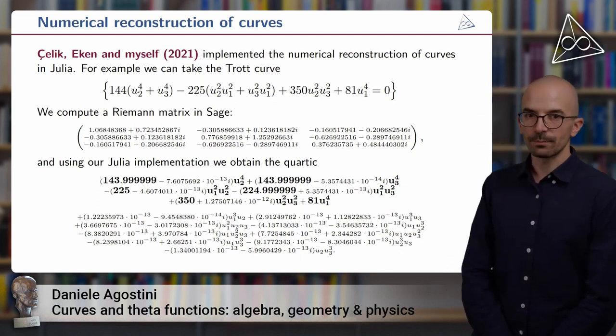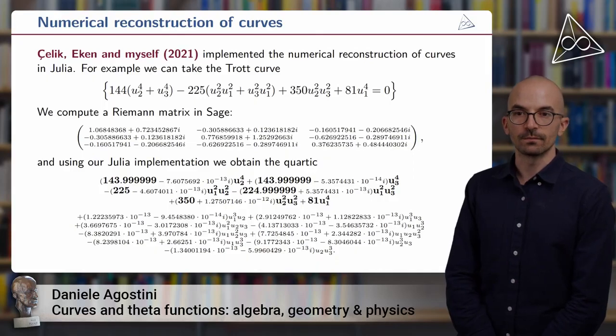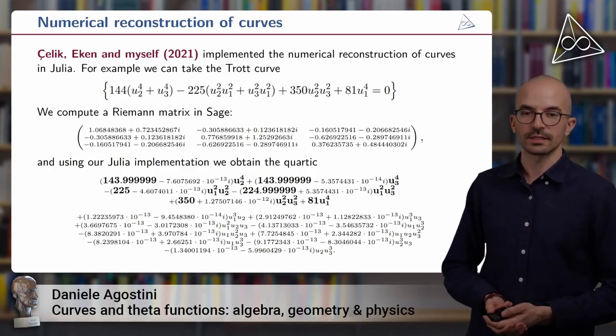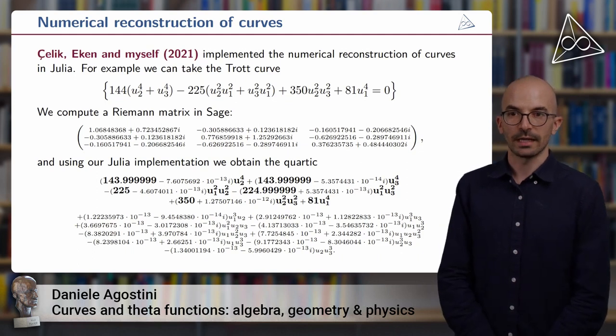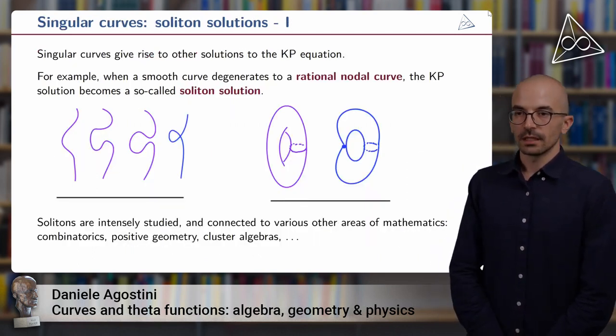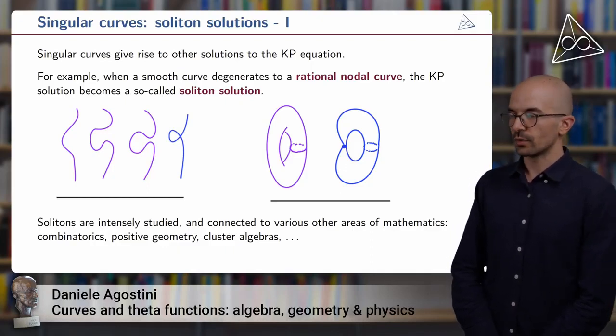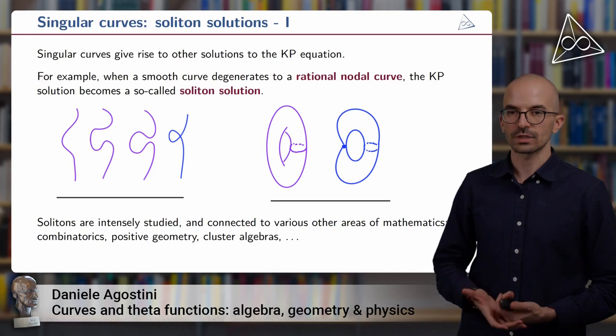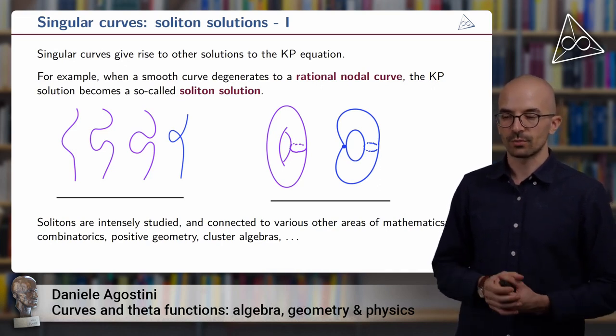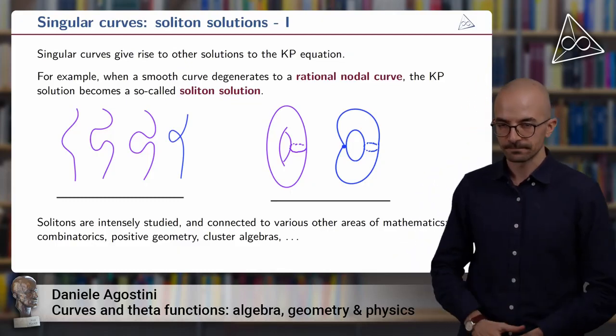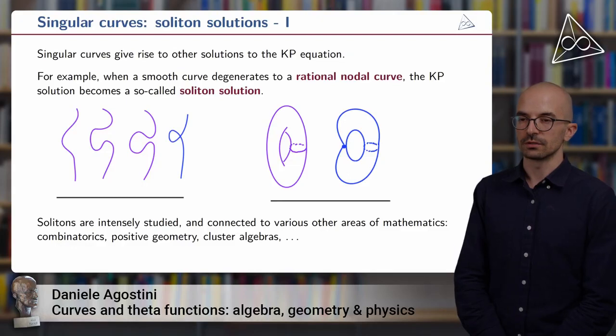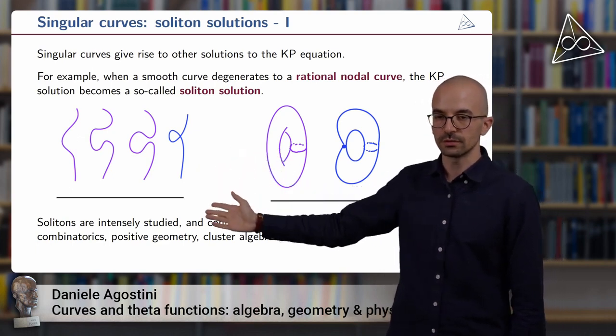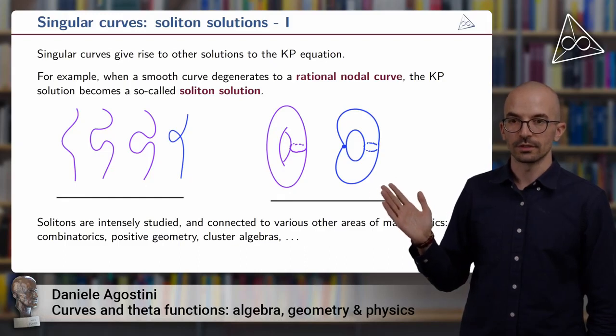So this was part of the story for smooth curves. It's part of a very rich story. But one of the powerful aspects of algebraic geometry is that it allows us to deal with singular entities as well. In particular, we can consider the situation where a smooth curve degenerates to a rational nodal curve. So rational nodal curves are the simplest possible singular curves, made of rational components that intersect transversely at nodes. We can see it in this cartoon. So here you see an elliptic curve degenerating to a rational curve with one node. And here you see the corresponding picture on the Riemann surface side.